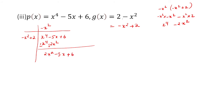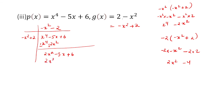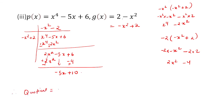Since there is no x squared variable in the dividend, bring it down. Bring down minus 5x and 6. Now, what should you multiply minus x squared with to get plus 2x squared? You should multiply with minus 2. Minus 2 into minus x squared plus 2 gives plus 2x squared minus 4. Signs change: 2x squared cancels, minus 5x plus 6 plus 4 becomes minus 5x plus 10. Therefore, the quotient is minus x squared minus 2 and the remainder is minus 5x plus 10. That is the answer.